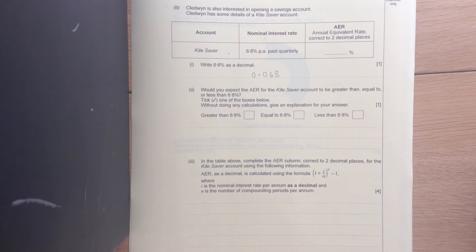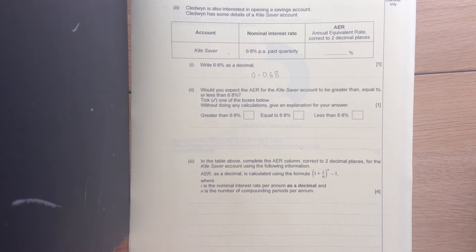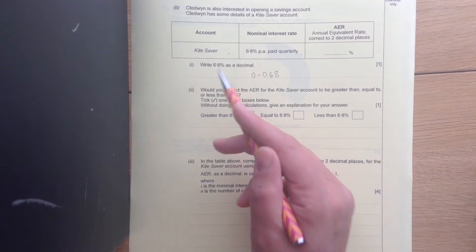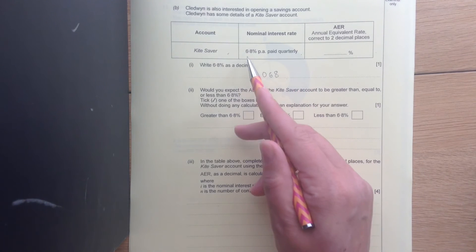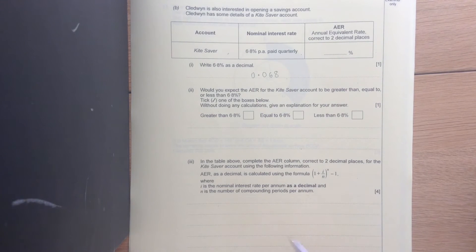Would you expect the AER for the kite saver account to be greater than or equal to 6.8%? Tick one of the boxes below without doing any calculations, give an explanation for your answer. So if he was paid annually at 6.8, he would be paid once a year. But here, he's going to be paid that percentage quarterly. So four times a year, it's going to be added on to his account. So you would expect the AER to be greater than 6.8.